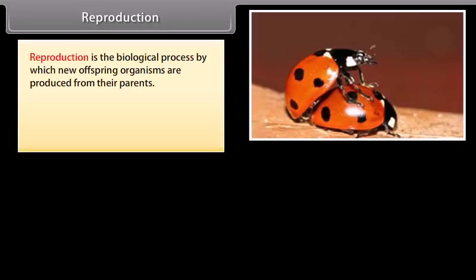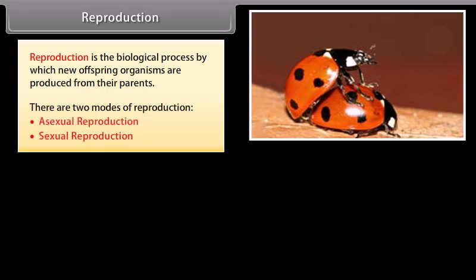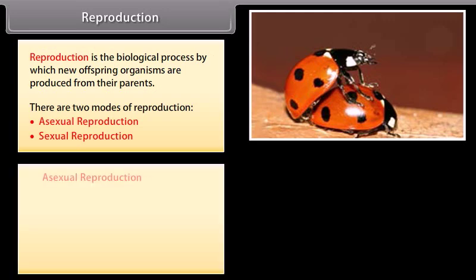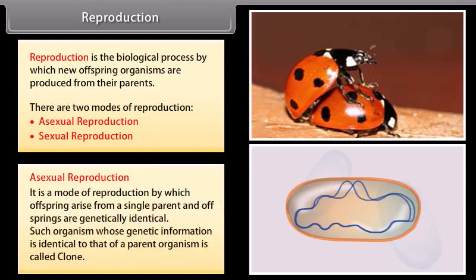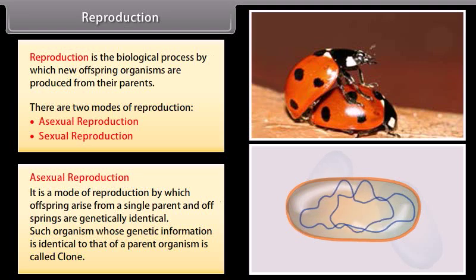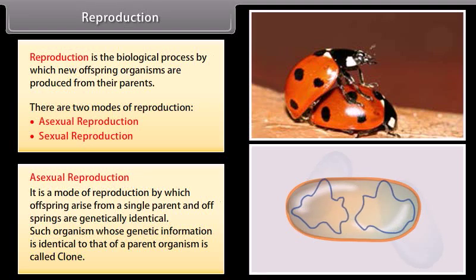Reproduction is the biological process by which new offspring organisms are produced from their parents. There are two modes of reproduction: asexual reproduction and sexual reproduction. Asexual reproduction is the mode of reproduction by which offspring arises from a single parent, and offspring are genetically identical.